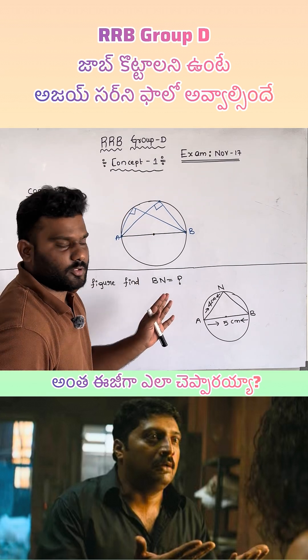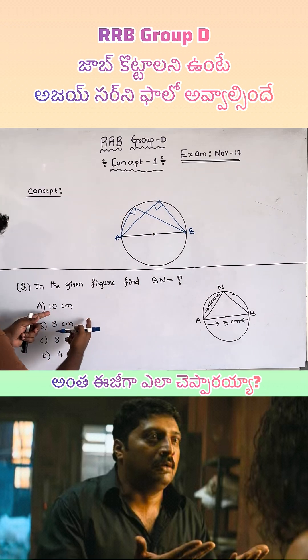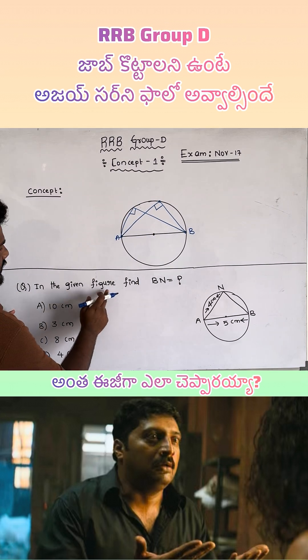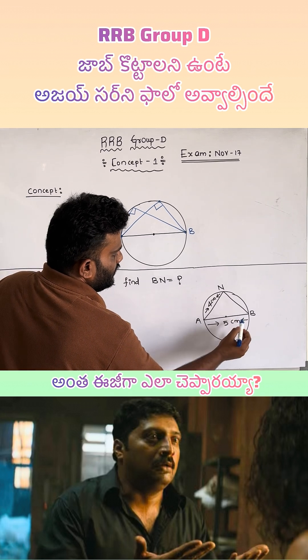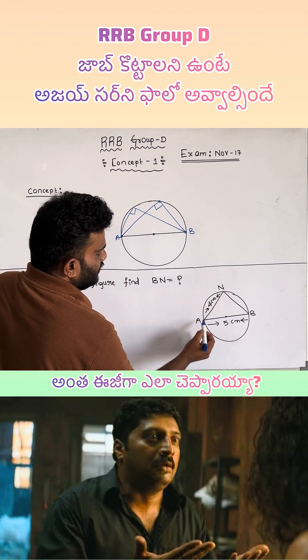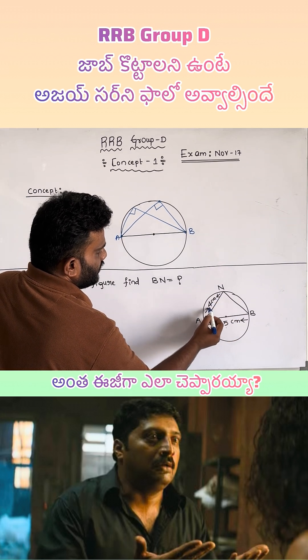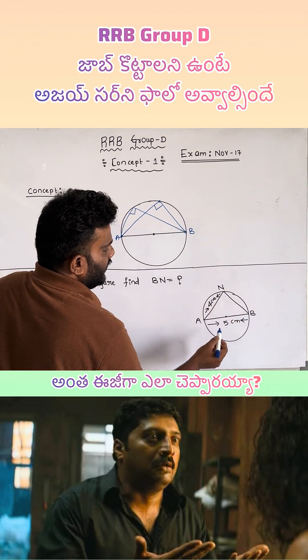Here, we have a question. In the given figure, find BN. AB (the diameter) is 5 centimeters. AN is 4 centimeters. Find BN.